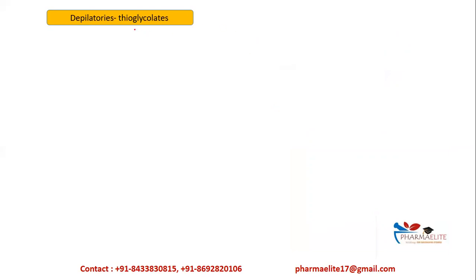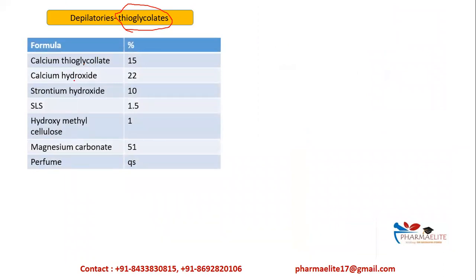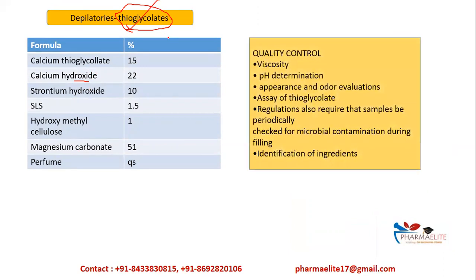Since sulfides can be too drastic, irritating, or are now withdrawn, thioglycolate is presently the main ingredient used in depilatories. It is stable at a wide range of pH and does not cause skin irritations or drastic adverse reactions. Thioglycolate-based depilatories consist of calcium thioglycolate, calcium hydroxide, strontium hydroxide, SLS, CMC, magnesium carbonate, and porcelain. The current main ingredient is thioglycolate, not metal sulfides, because sulfides can be toxic and irritating.